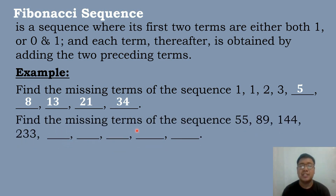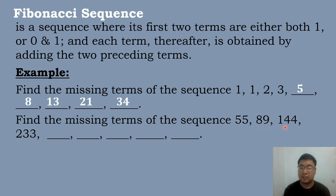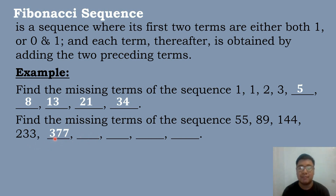Find the missing terms of the sequence 55, 89, 144, and 233. This is an example of Fibonacci sequence. We will add the first term and the second term to get the third term. So 55 plus 89 is 144. And then 144 plus 233 is equal to 377. Then add the fifth and fourth terms to get the sixth term: 377 plus 233 is 610. 377 plus 610 is equal to 987. 610 plus 987 is equal to 1,597.